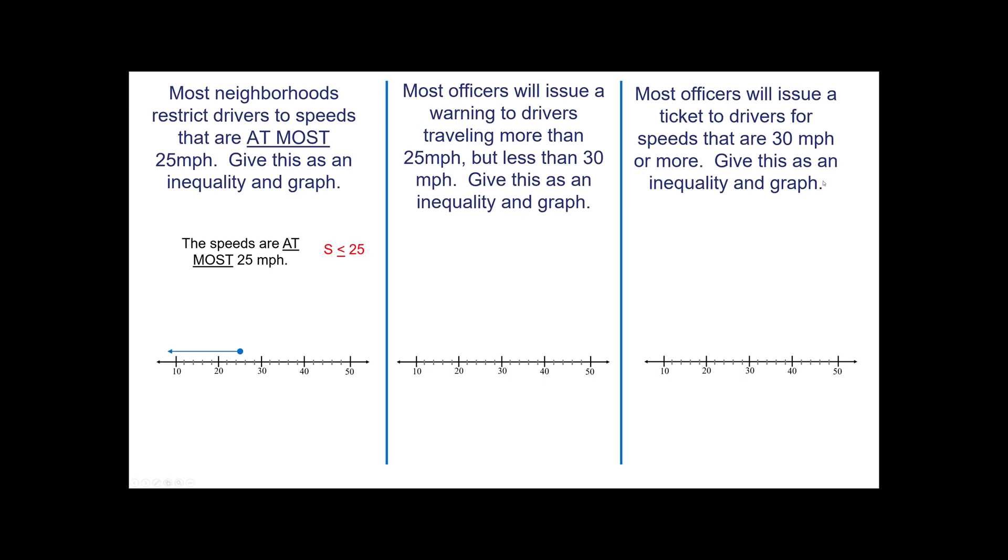Let's come over here to the right. Most officers will issue a ticket to drivers for speeds that are 30 miles per hour or more. Give this as an inequality and a graph. Can you express that? How about S is greater than or equal to 30. 30 or more means include the 30 or anything higher than 30. Starting at 30, we go to the right. Since the 30 is included, we put a dot.